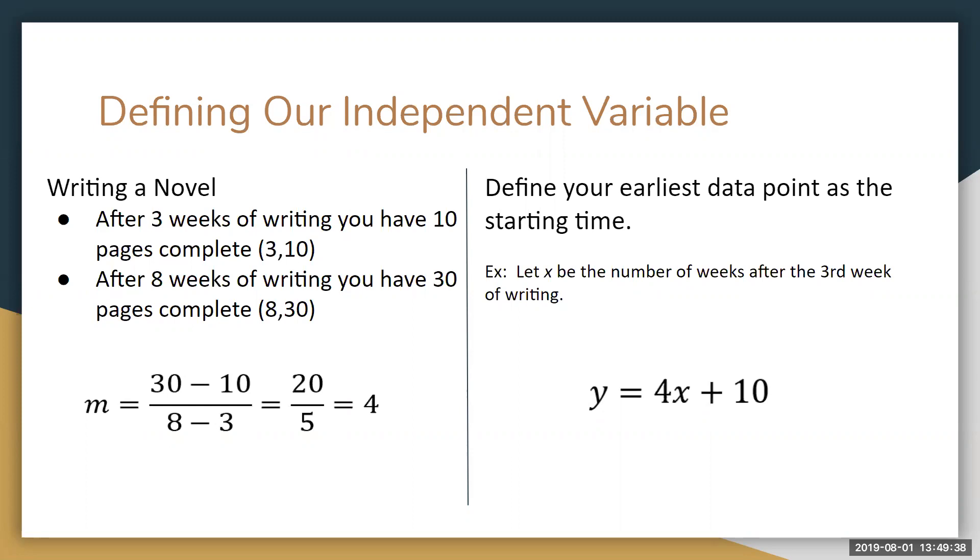4 from the slope formula, and the 10 is our initial value from our first point. Just keep in mind that x is now standing for the number of weeks after three, so we may have to make some small adjustments when using our model.